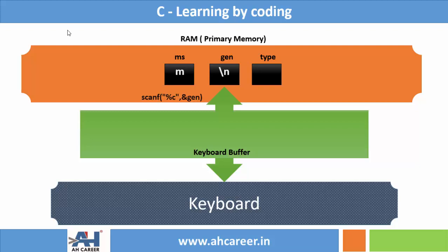The cursor directly skips to 'type', which is the account type. At that point there is no extra data in the keyboard buffer, so we can give input for account type. That is the reason why every time we work with character inputs, it is recommended to use fflush(stdin) before reading any character. fflush(stdin) clears the keyboard buffer before reading any character.